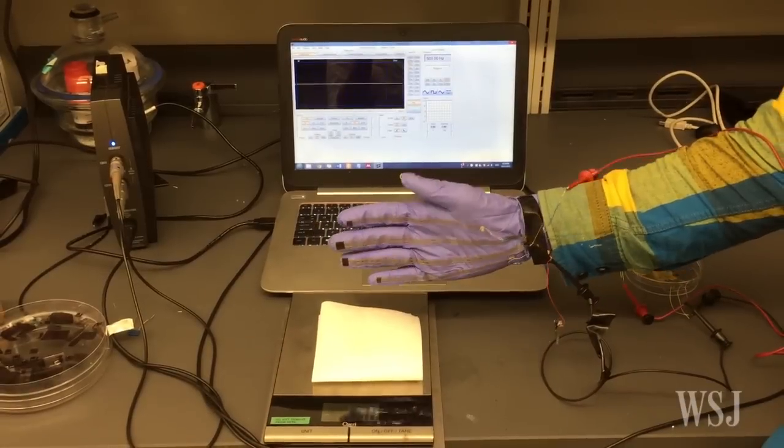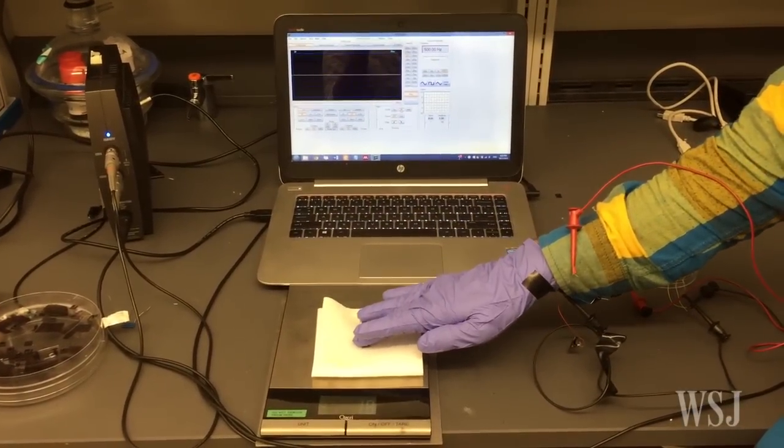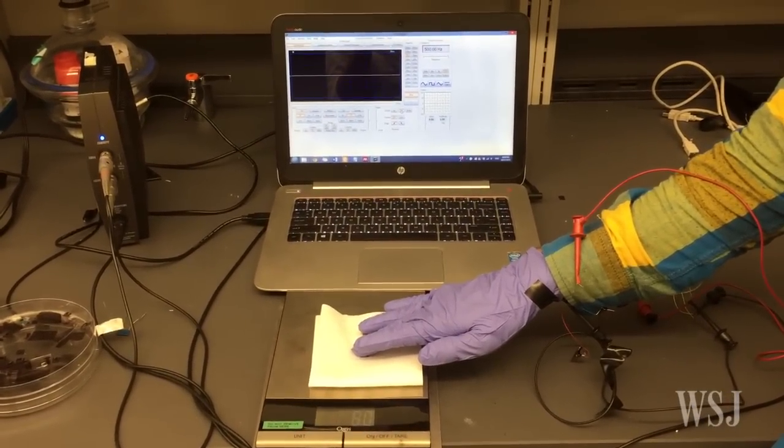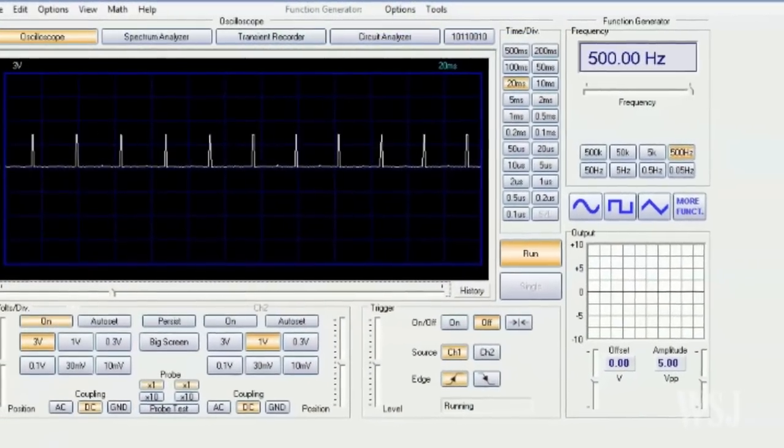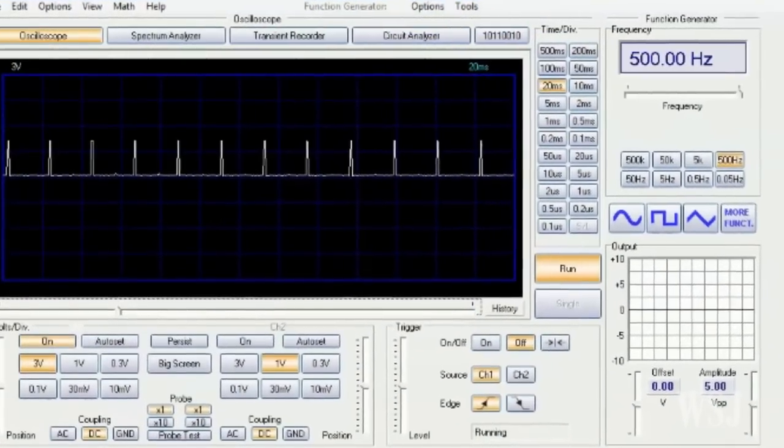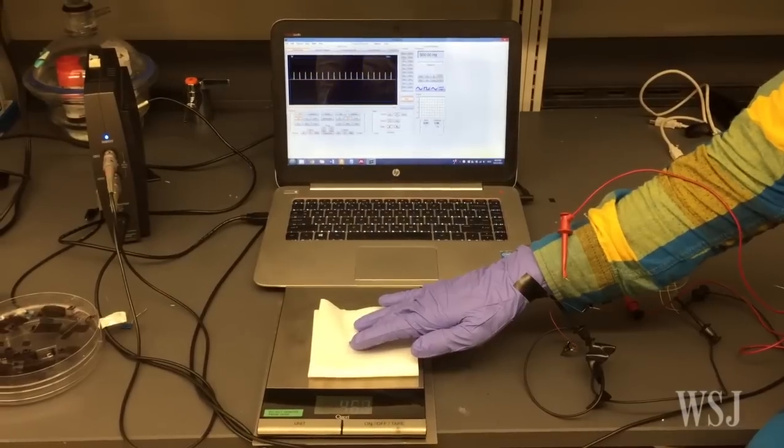To show how the artificial skin would communicate with the nervous system, the scientists engineered neurons and translated electronic signals into light pulses. In tests, they were able to show how the light signals can activate the neurons.